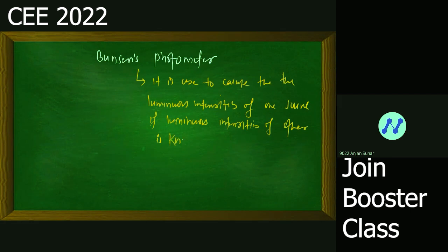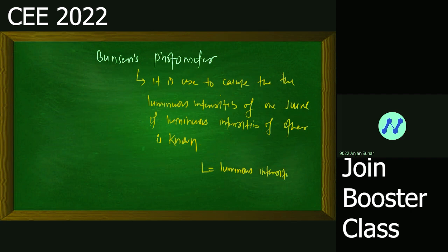The power of the lamp — the luminous intensity limit is related to the power of the lamp. This is also known as the power of the lamp.